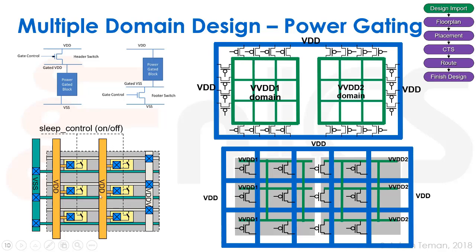Power gating uses stripes of VDD that feed into switches, which then power the rails feeding the cells themselves. There are two primary approaches: the outer gated style, where switches placed around the domain in parallel allow regular place and route inside, but create a longer current path to each gate; or the interleaved style, where switches are distributed inside the domain for shorter paths, though this makes floor planning more complex.